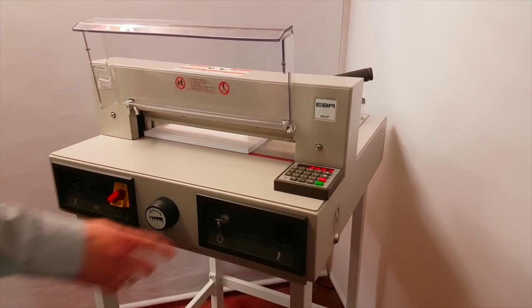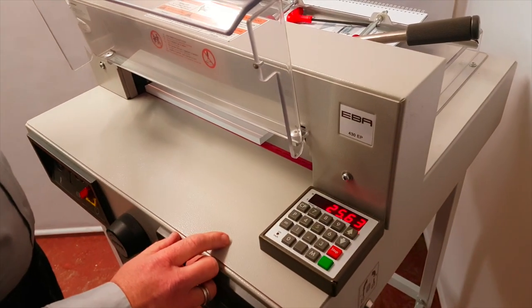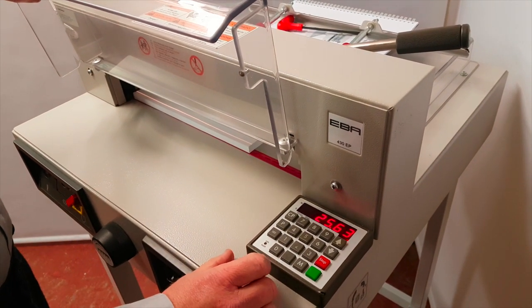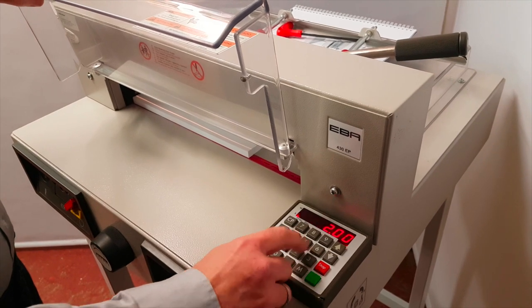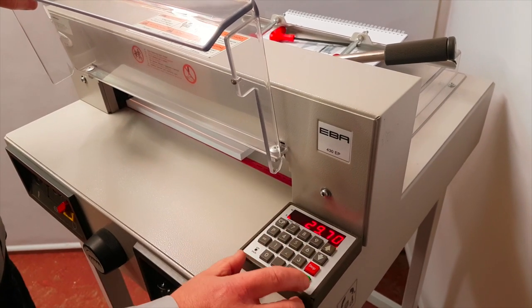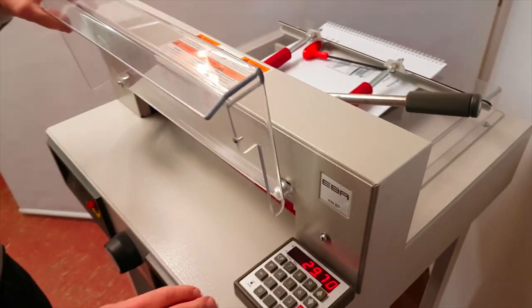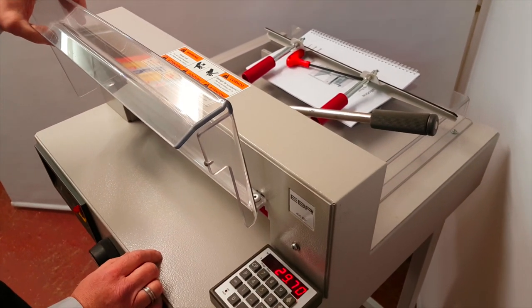Very easy to use. We have a keypad with digital display. We can either type in a size that we know, for example 297 for A4, press the green button, and the back fence will automatically go there and register to that size.